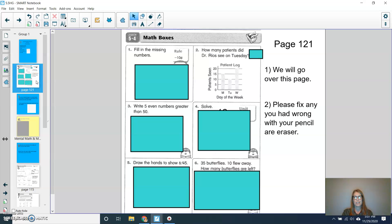The first thing that we're going to do is go over our math boxes from the previous lesson. So if you can open up your math journal to page 121. If you're noticing that you have any mistakes, please fix those with your pencil and eraser. So for question number one, fill in the missing numbers. So we started at 86 cents and then minus 10, we would have 76, 66, 56, then 46, 36, and 26. And if you put the cent symbol behind, that would be great too.